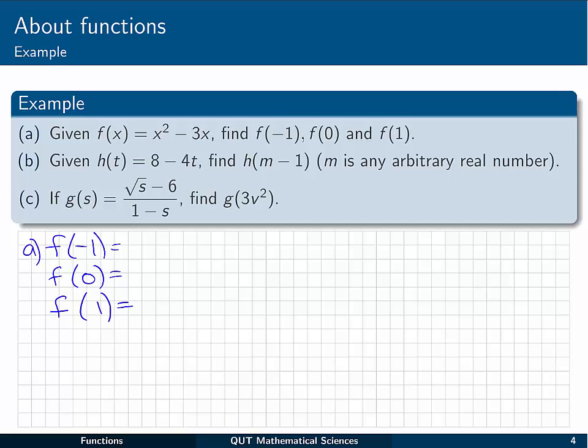We're going to try to evaluate some different functions here: f of x, h of t, and g of s. Looking at f of x first of all, in part a, f of x is the function x squared minus 3x. Now that just means if I give you any x value, the function I want you to return to me will be the x value squared, take away 3 times the x value. So when we look for f of minus 1, we're looking for minus 1 squared, and then take away 3 times minus 1. Well that's pretty easy, we can just go that's 1, minus 3 times minus 1 is plus 3, and we end up with 4.